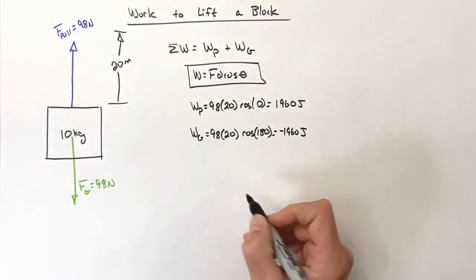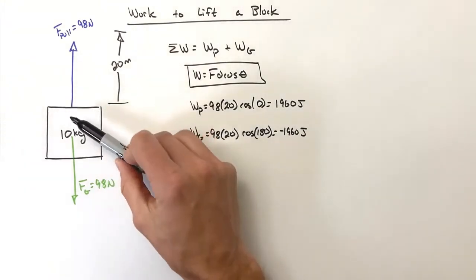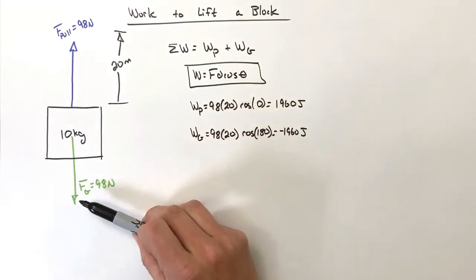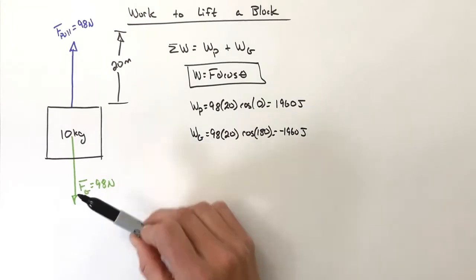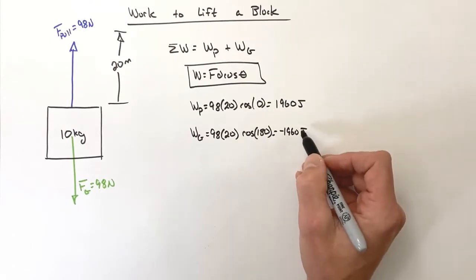Practically, what this means is that whatever energy is given to the block by attempting to lift it, gravity takes away, or really gravity turns it into some other form of energy, which we'll talk about later when we get to gravitational potential energy.